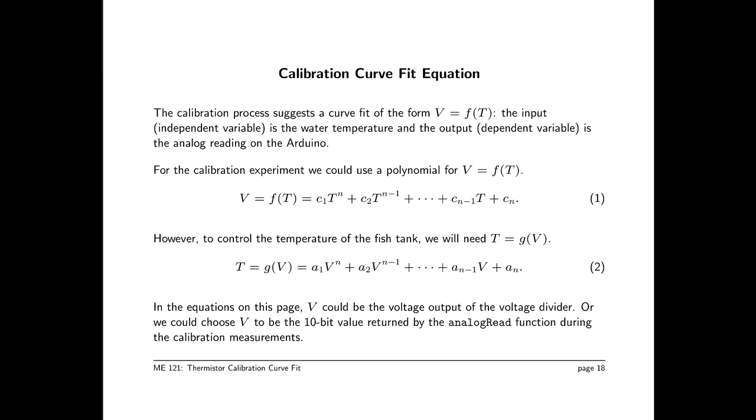For both of these equations, V could literally be a voltage measured at the output of the voltage divider, or we could choose V to be the 10-bit value that's returned by the analog read function during the calibration measurements. Since we're going to be controlling the fish tank with readings on the Arduino, we might as well leave V in the 10-bit raw analog input values. So we just need to be mindful of which units we're working with.